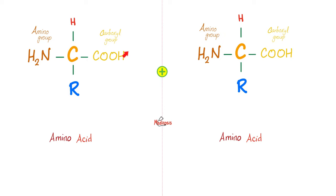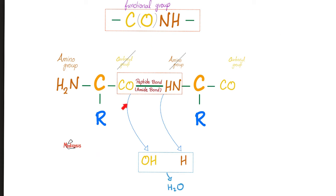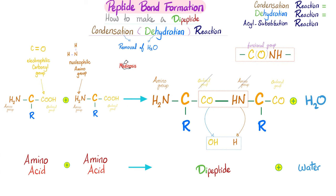You see the carboxyl group of this amino acid and the amino group of the next amino acid? Let's remove the OH from the first and the H from the second to make water. And what's left is going to make a peptide bond, also known as amide bond, giving you this functional group right here. Because this reaction yielded water, you can call this a dehydration reaction.